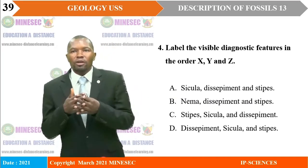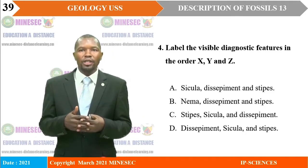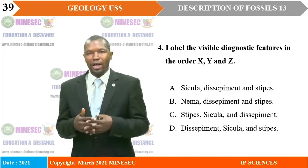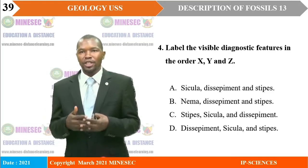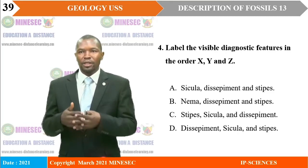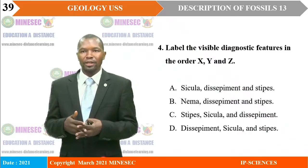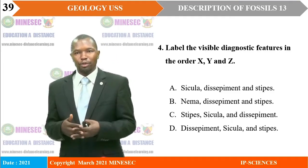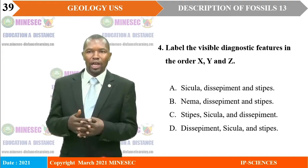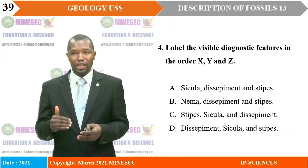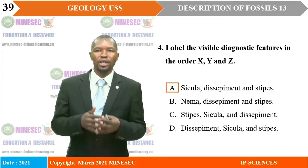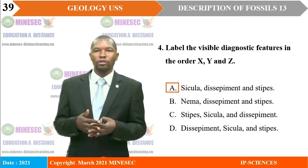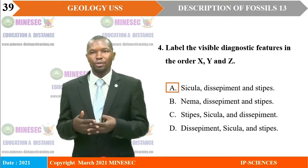Number 4: Label the visible diagnostic features in the order X, Y, and Z as seen in our fossil drawing. A: Circular, dissepiment, and stipes. B: Nema, dissepiment, and stipes. C: Stipes, circular, and dissepiment. D: Dissepiment, circular, and stipes. Remember the order of labeling is very important. The correct answer is A — X stands for circular, that is the beginning part of the fossil; then dissepiment for Y; and stipes for Z.